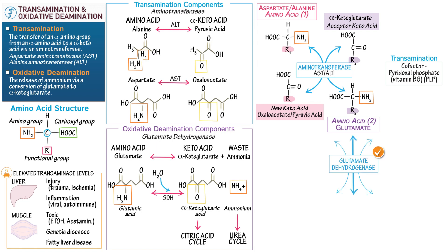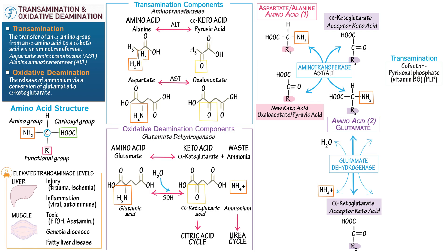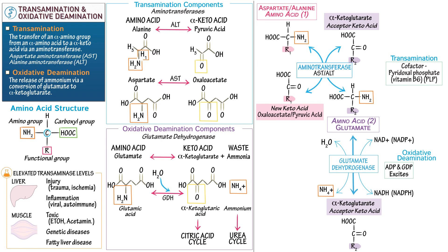Glutamate dehydrogenase converts glutamate to alpha-ketoglutarate — the original acceptor amino acid found in the transamination reaction. Double-headed arrows show this is a reversible reaction. Water enters the reaction and ammonium exits it. The reaction also involves the reduction of NAD⁺ to NADH, or NADP⁺ to NADPH. Energy deficiency states — high levels of ADP and GDP — will excite the reaction, whereas energy surplus states — high levels of ATP or GTP — will inhibit the reaction.